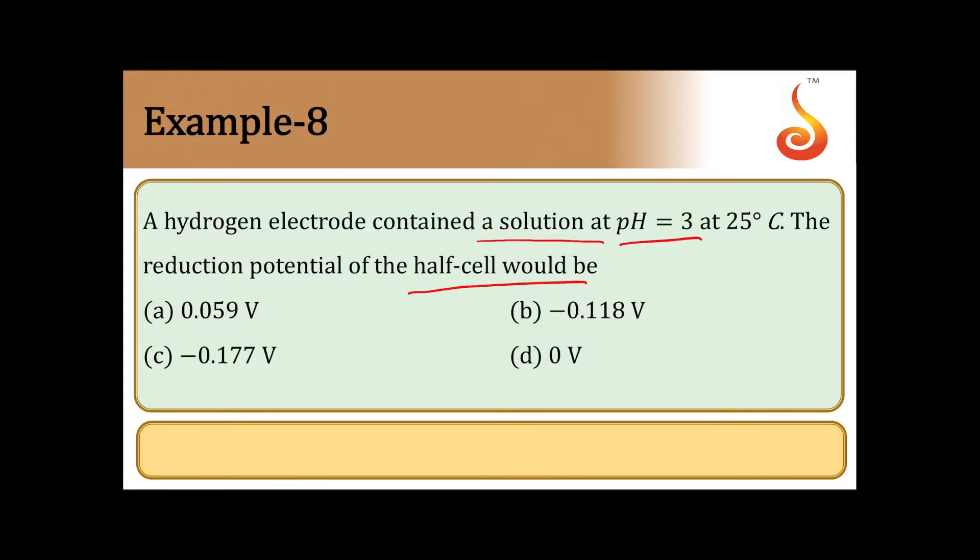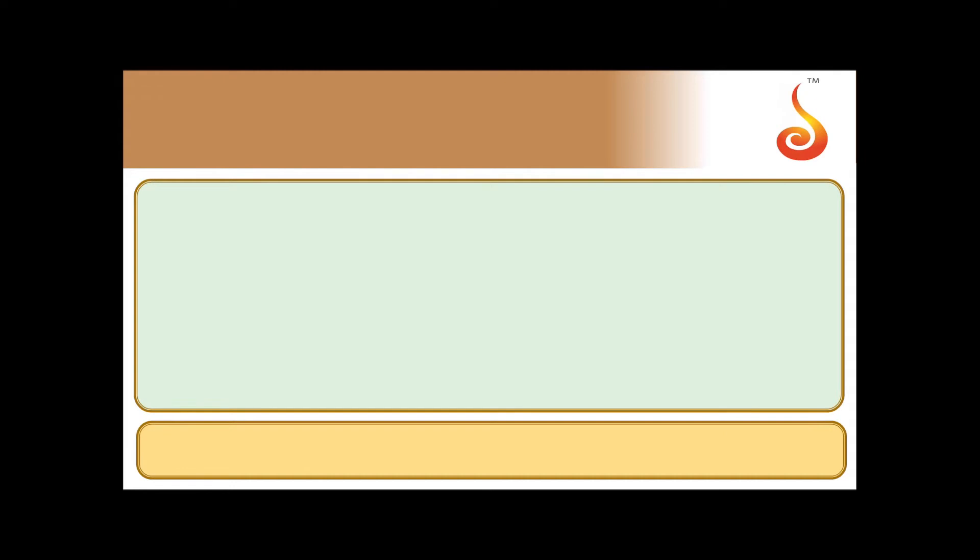So let us first write the half cell reaction and then apply Nernst equation for that. First writing the half cell reaction: 2H+ plus 2 electrons giving rise to H2.